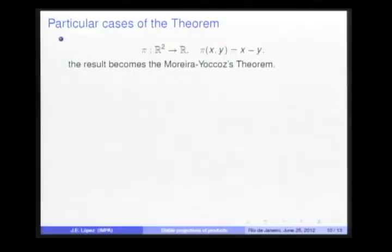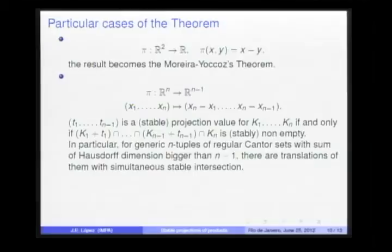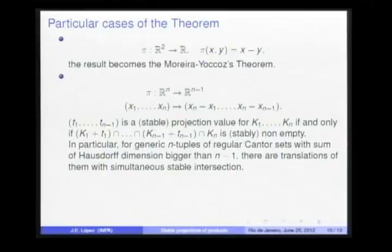Well, we recover the Moreira-Yoccoz theory with the arithmetic difference function. For this other particular projection, the stable projection value definition means a stable intersecting property after the value translation. In particular, for generic n-tuples of regular Cantor sets with Hausdorff dimension bigger than n minus 1, there is a translation of them with simultaneous stable intersection.